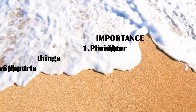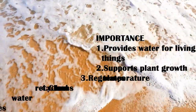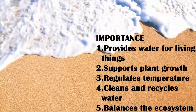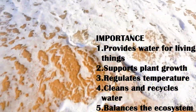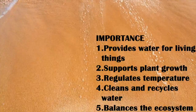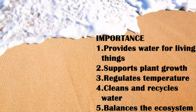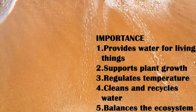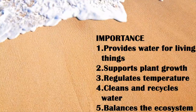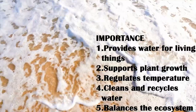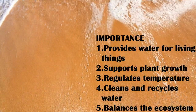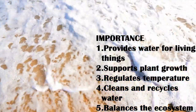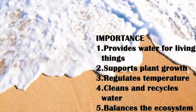Do you know the importance of the water cycle? The water cycle makes sure that animals, plants, and humans always have fresh water to drink and use — it provides water for all living things. Rain from the water cycle helps plants to grow. The cycle also helps keep the earth cool by moving water and heat between land, water, and air, regulating the temperature and balancing the ecosystem.